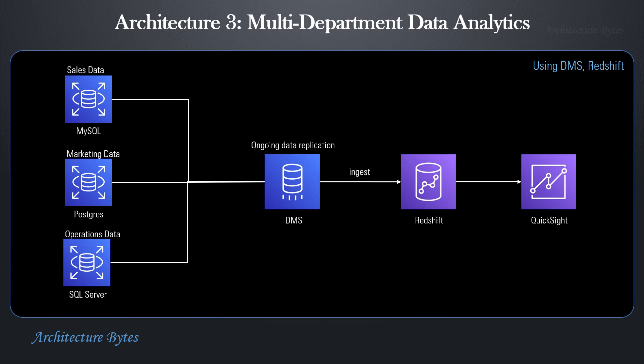Here is a variation of the use case and architecture where the data source is in three different RDBMS databases. We will aggregate the data in Redshift by using DMS or Database Migration Service to replicate data from the source databases into a target Redshift database. Note that DMS can also do ongoing replication to keep the data up to date within Redshift. Once the data is available in Redshift, it can be queried, analyzed, and visualized in QuickSight.